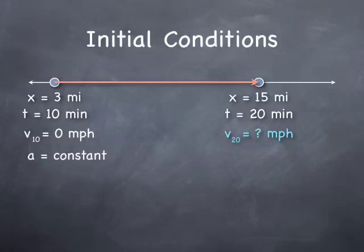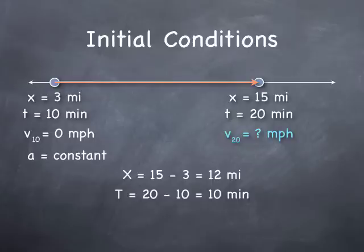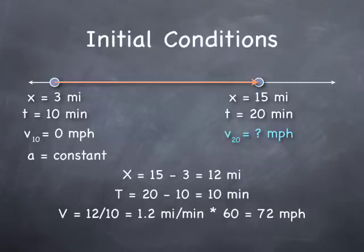The question, then, is what is our final velocity at time 20? How fast are we going when we hit the 15-mile marker? One thing we know is that the total distance we have gone is 15 minus 3, which is 12 miles. The total time we spent is 20 minus 10, which is 10 minutes. And the average velocity of our entire trip is 12 divided by 10, or 1.2 miles per minute. Multiply that by 60, and we get 72 miles per hour.